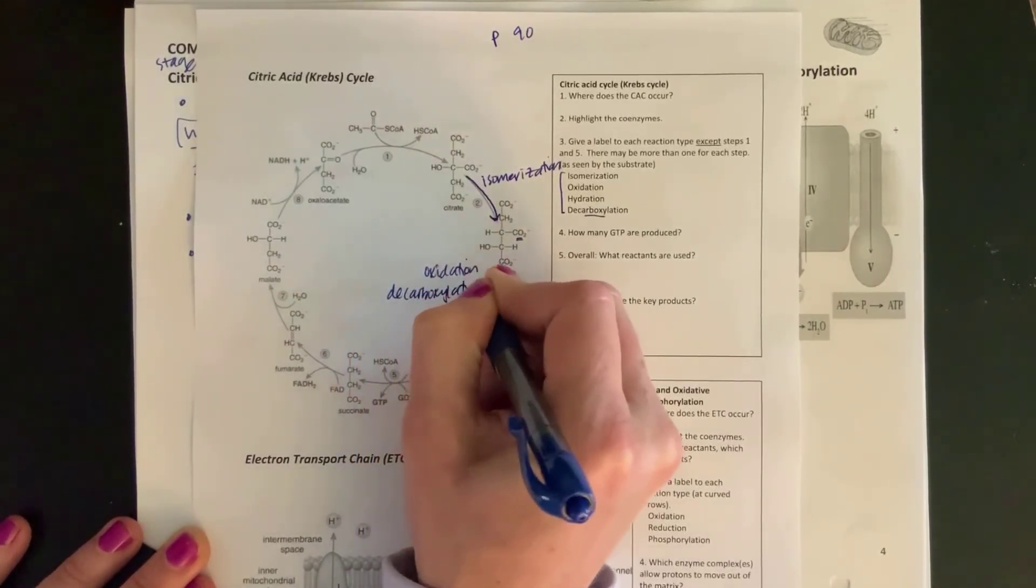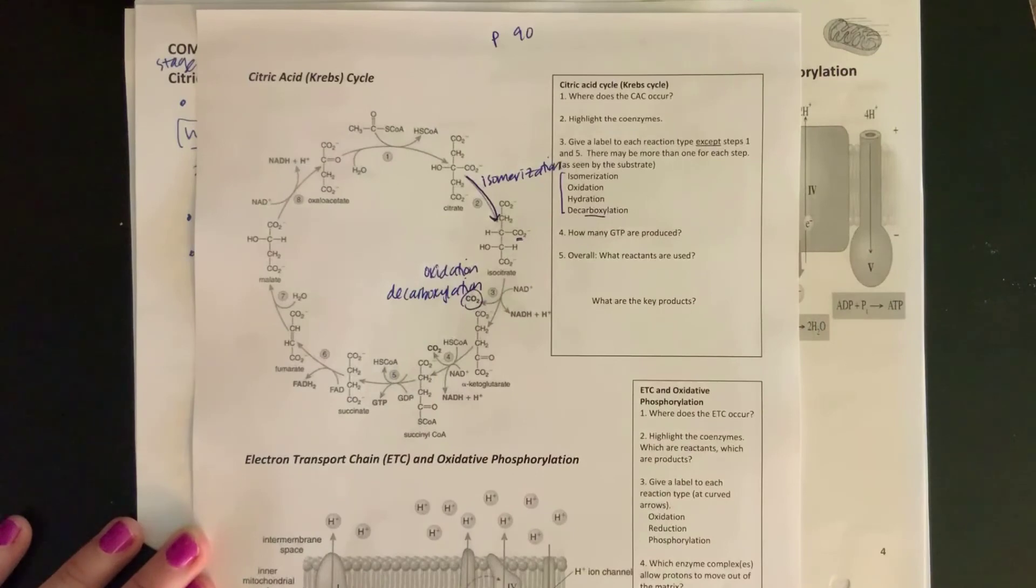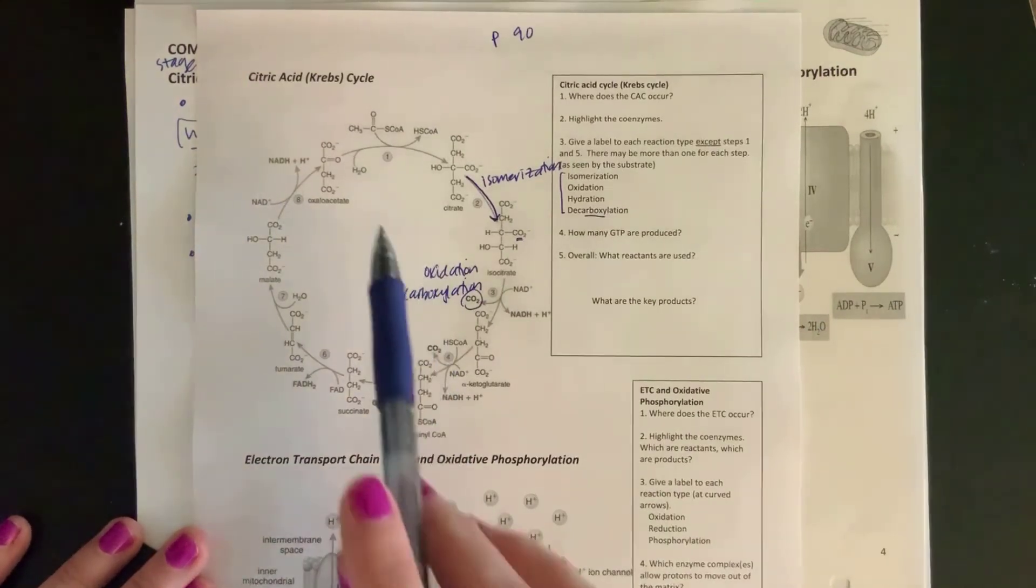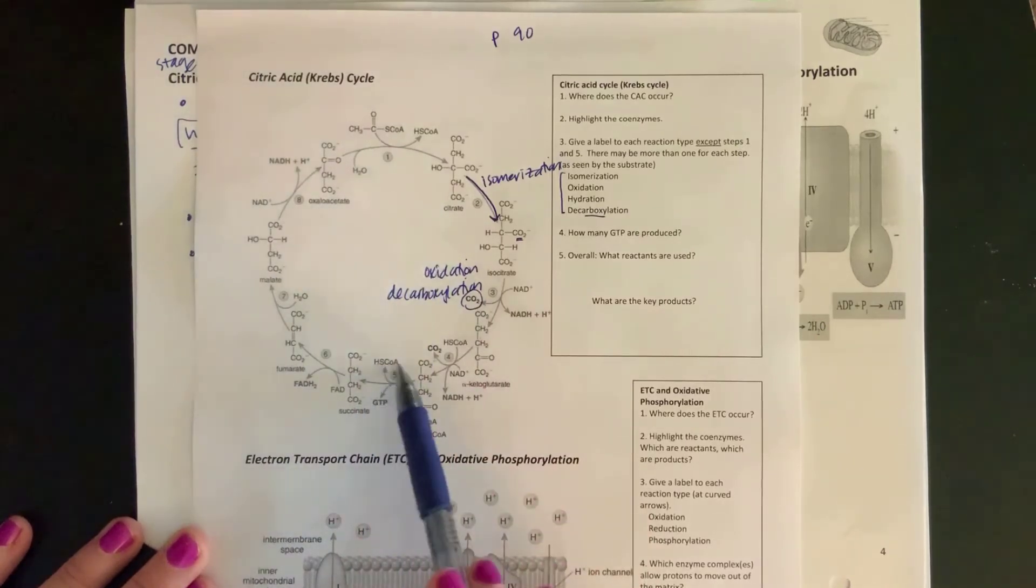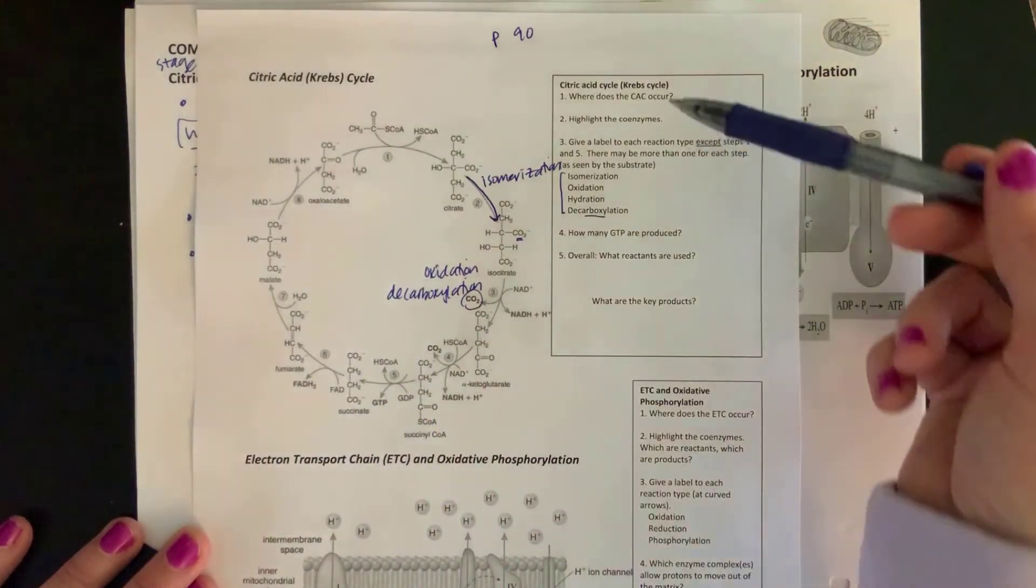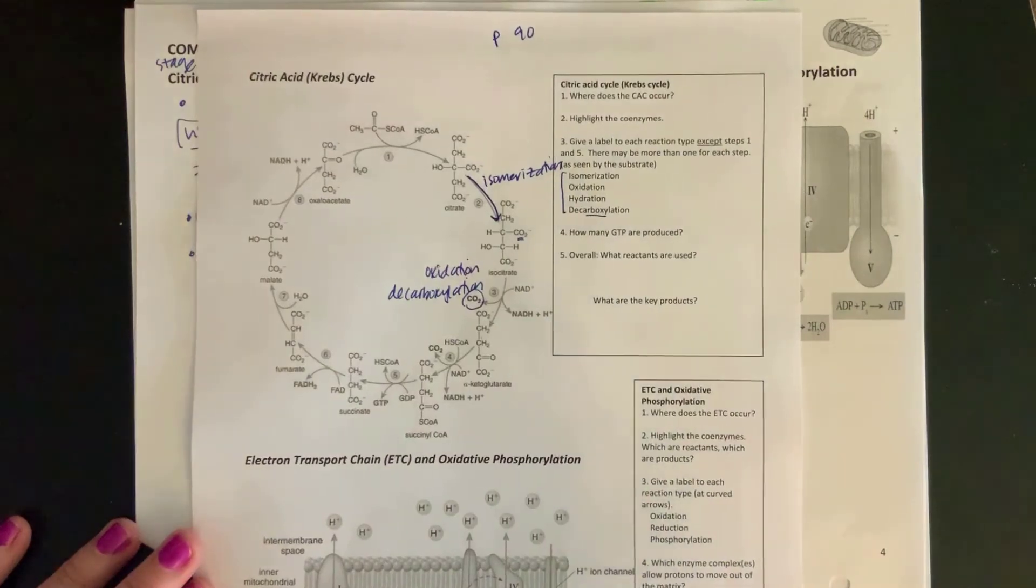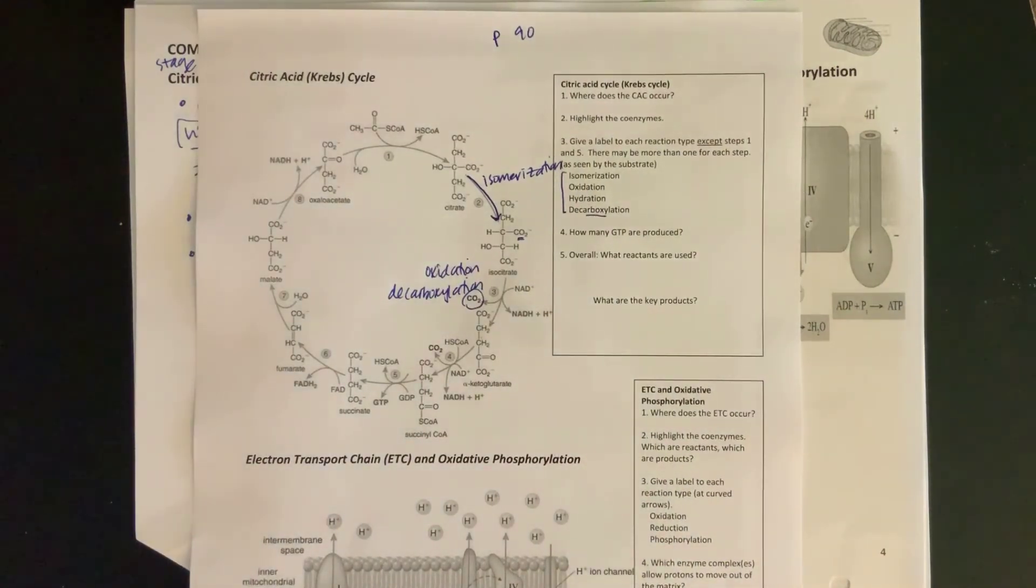It's a little bit tricky to describe what's happening at steps 1 and steps 5, so I won't ever ask you those. But you should be able to work through all of these questions about what's happening in the citric acid cycle.